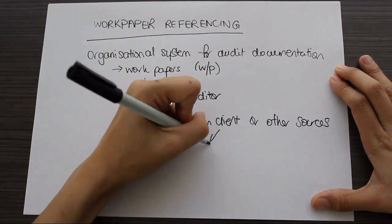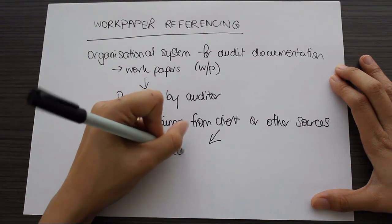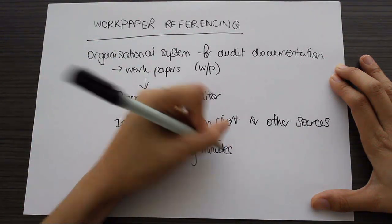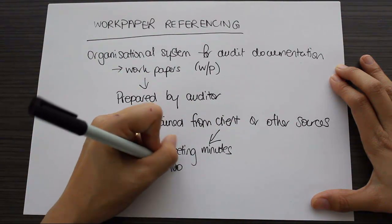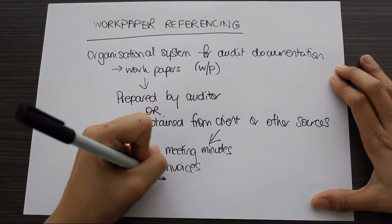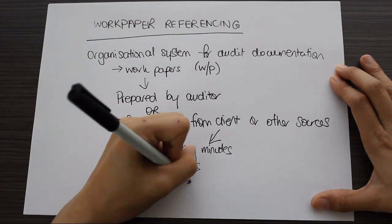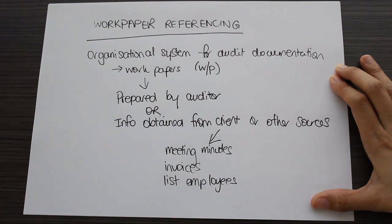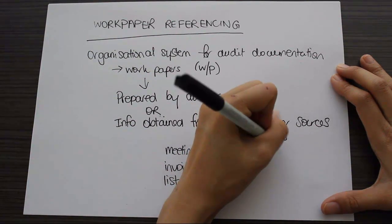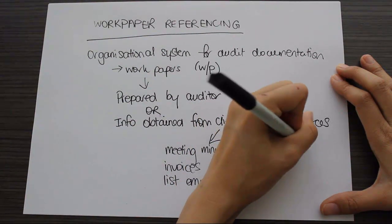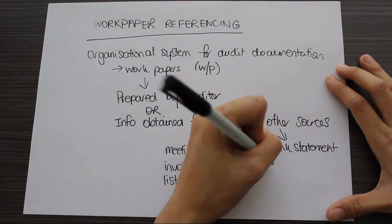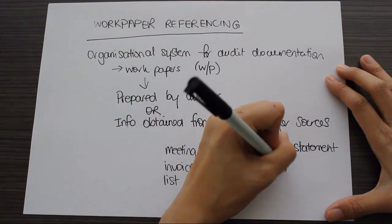So what sort of things might come from the client? Meeting minutes, you could also have things like invoices, a list of employees. The other sources of information, you might get a bank statement, you might have supplier price lists.